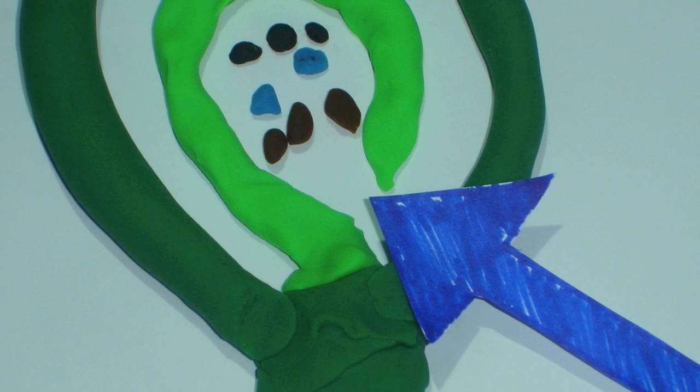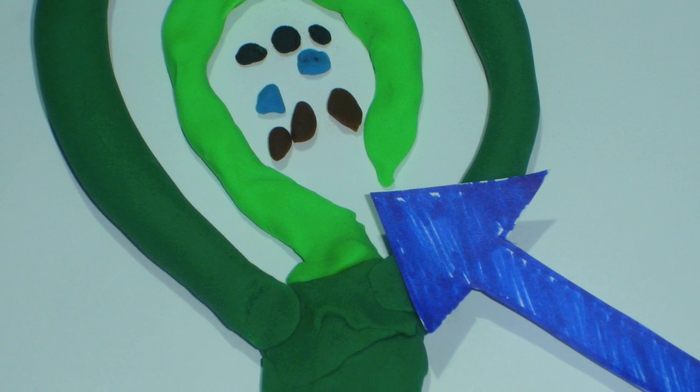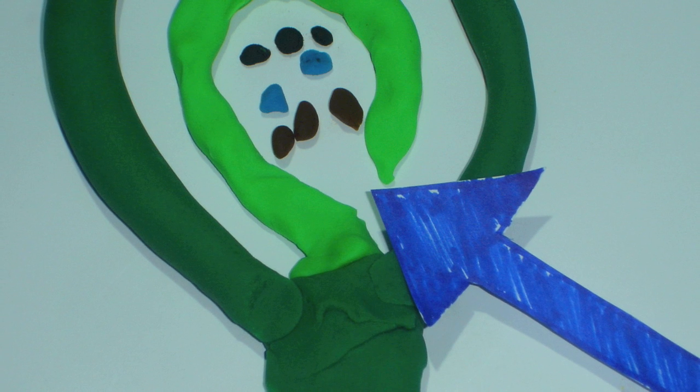This is the micropyle. It is an opening of the ovule through which the pollen tube will enter through.